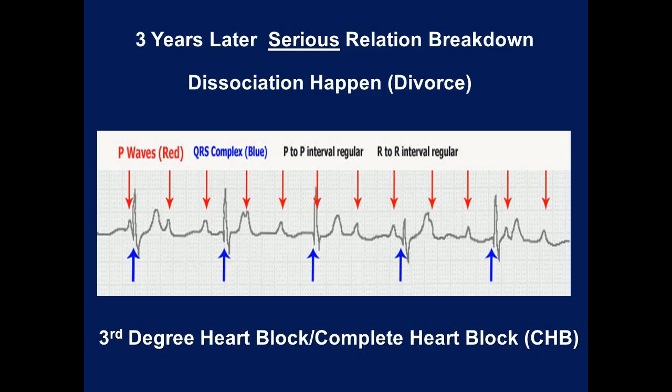In other words, the QRS complex is not caused by conduction of the P wave through the atrioventricular node to the ventricles, but rather the QRS is initiated at a site below the atrioventricular node — at the His bundle or Purkinje fibers. More P waves at regular intervals than QRS, which is slower and regular. This is called Third Degree Heart Block.